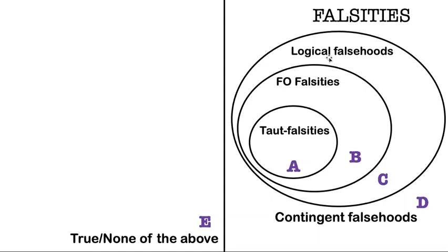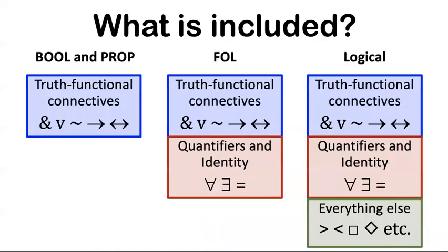Now that we have multiple logical systems, we have more and more levels of fineness of grain, and so it's really helpful to understand what each of these circles means. Now, the total logical level, that's just the systems bool and prop that we've been talking about. The total logical systems are those that include just the truth functional connectives. So if a sentence is necessarily false, for example, just because of what the truth functional connectives mean, then it's a total logical falsity.